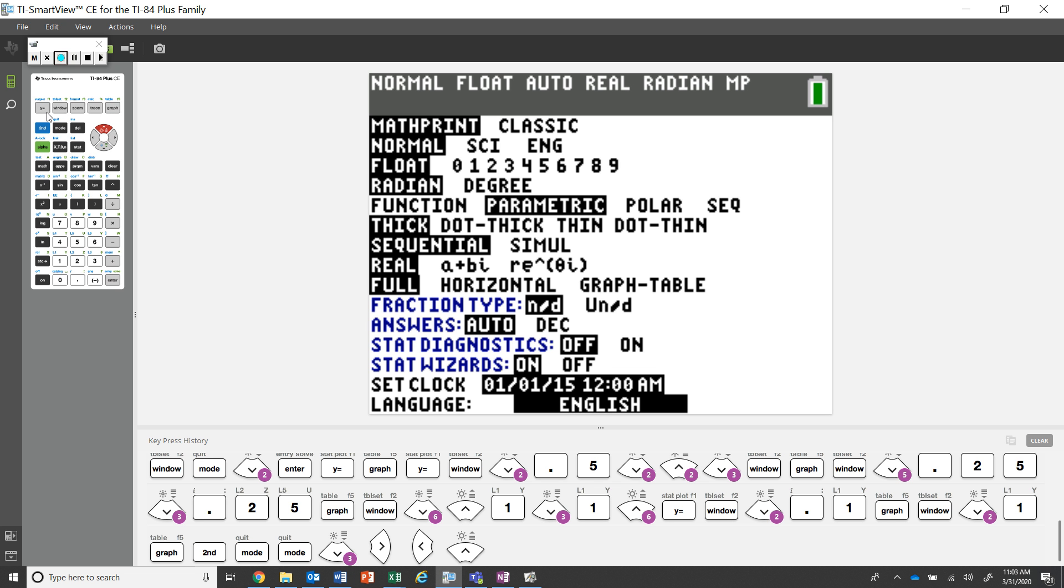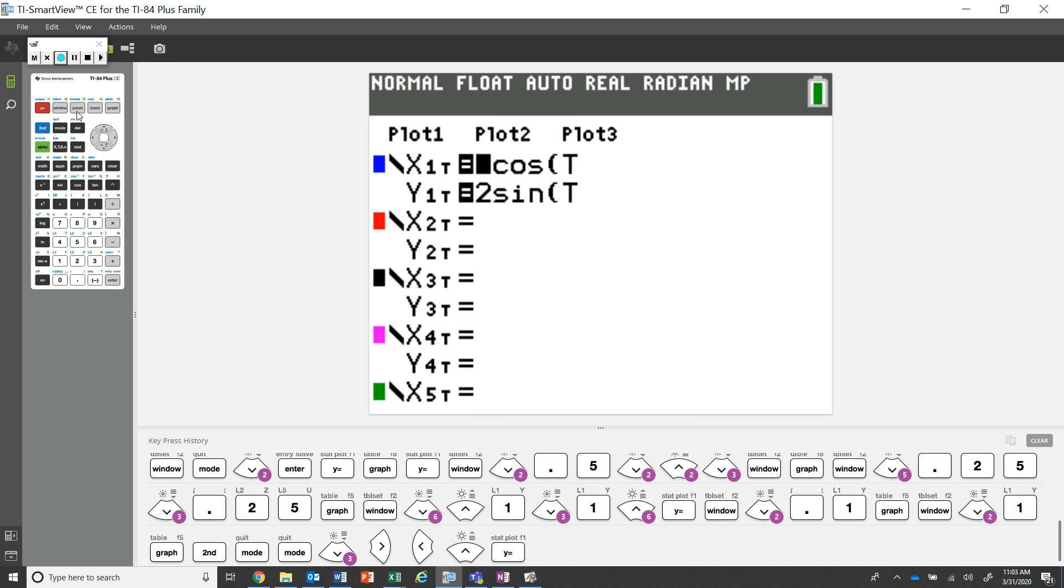If that's the case, we can go ahead and go to our y equals and we had x equals two cosine of t and y was two sine of t.